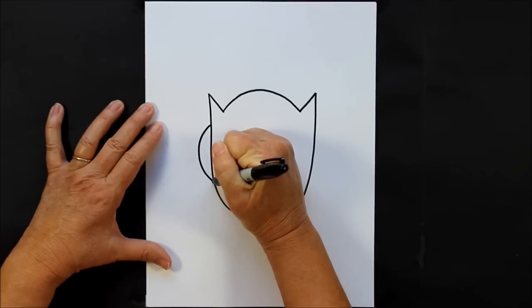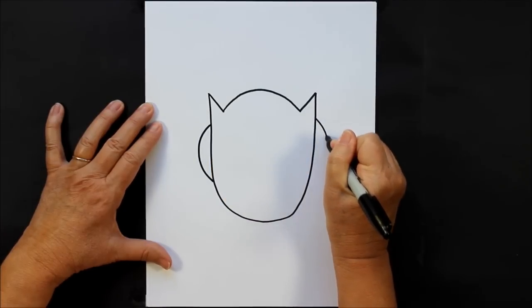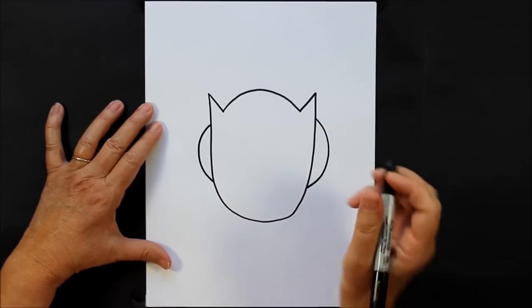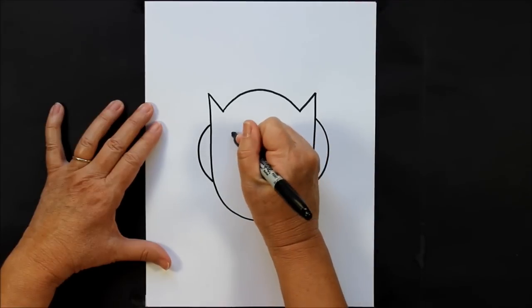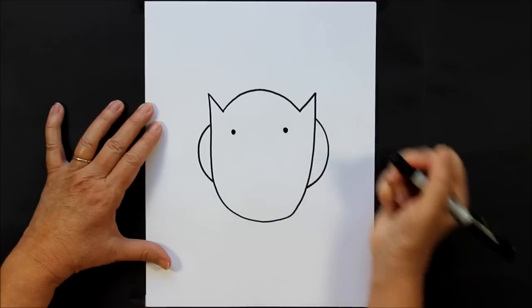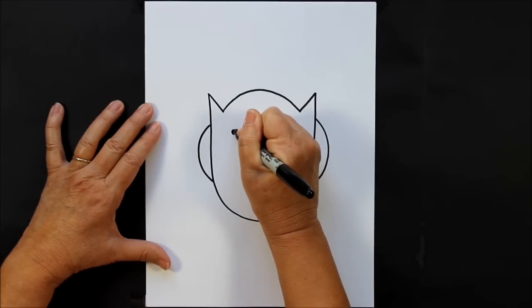So we're going to have some curved lines coming out from his body, and then inside we are going to make his eyes. This time we're just going to put some dots, and then I wanted to show you a really cool way to make some owl eyes.